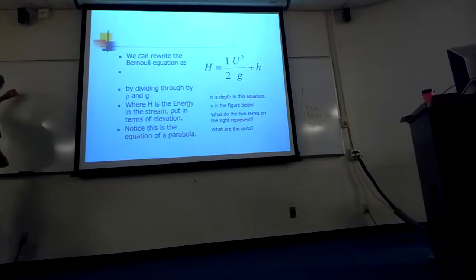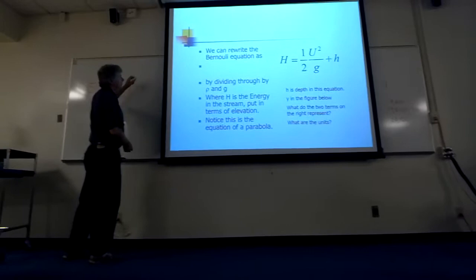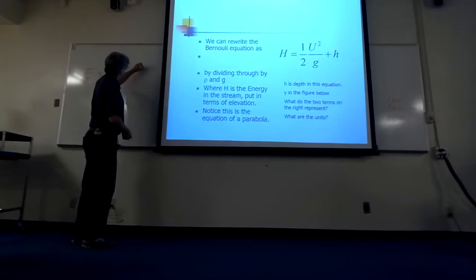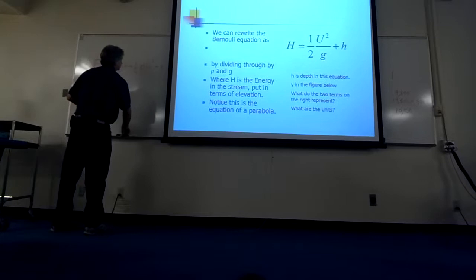Rho gh plus one-half rho u squared plus p, and we get rid of p so we don't have to worry about that.